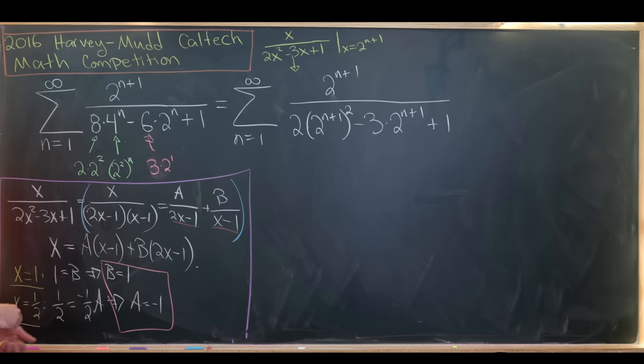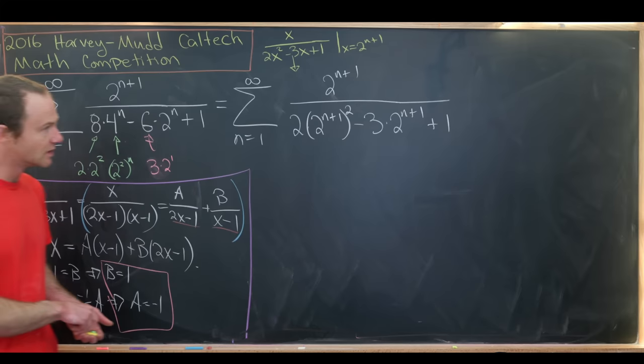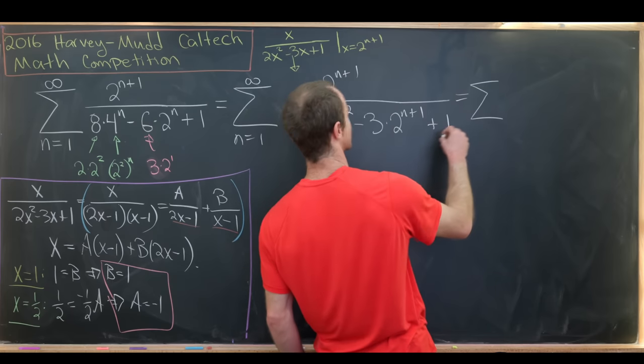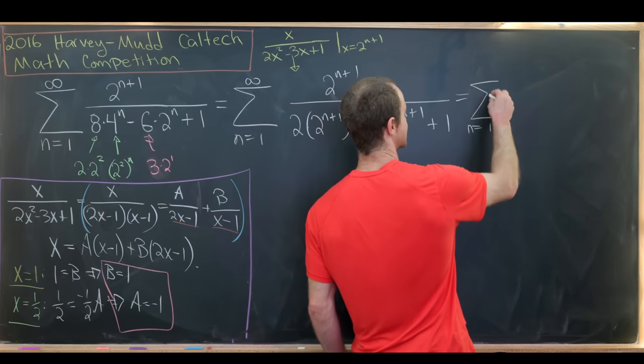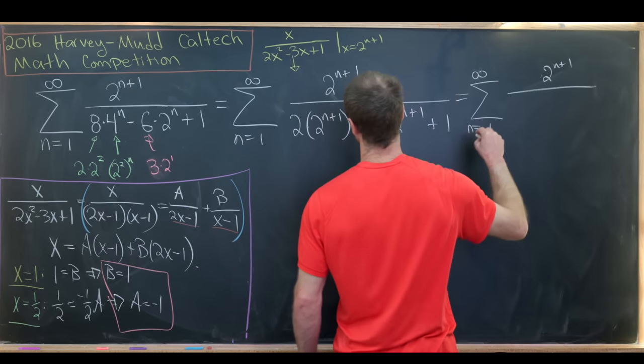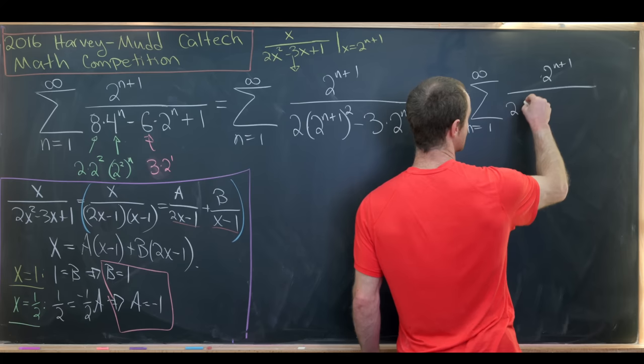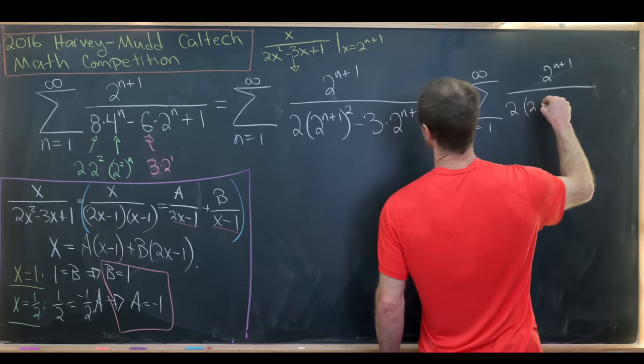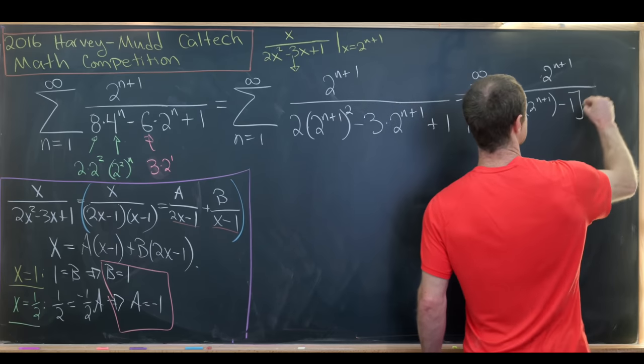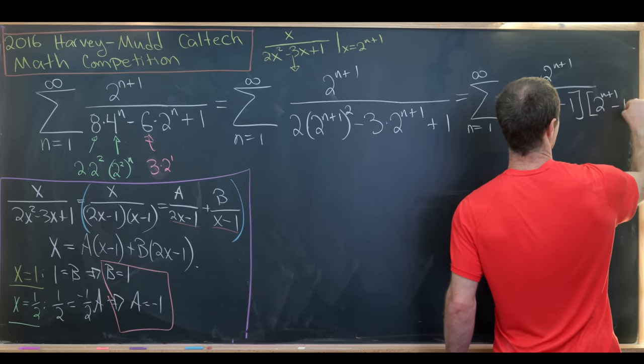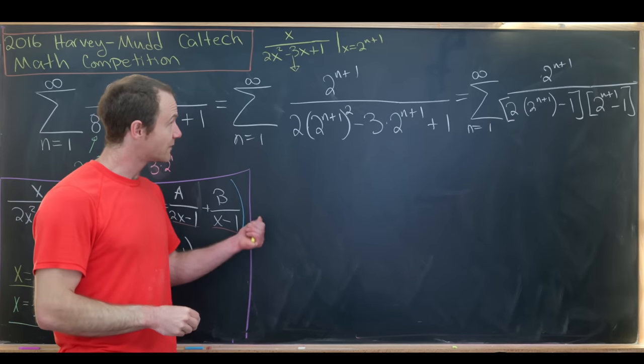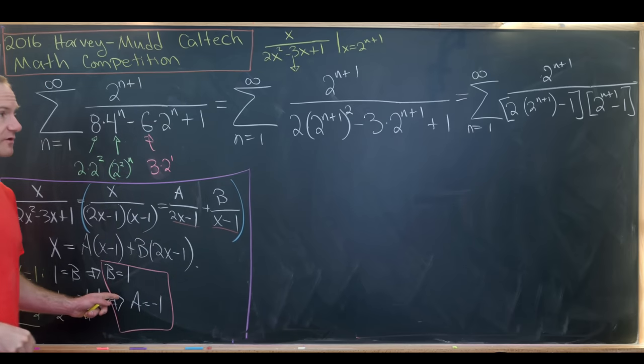Okay, great. So that tells us our decomposition here. So let's maybe motivate that decomposition a little bit by factoring this denominator. So here we've got this factors as I still have my 2^(n+1) in the numerator, and then in the denominator I have 2 times 2^(n+1) minus 1, and then that is times 2^(n+1) minus 1.